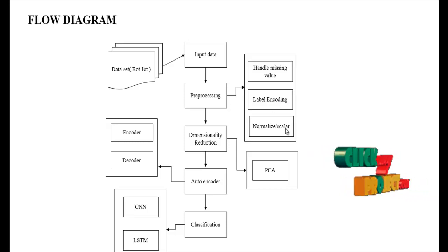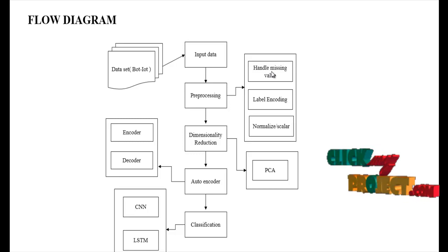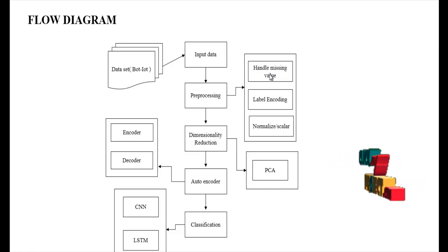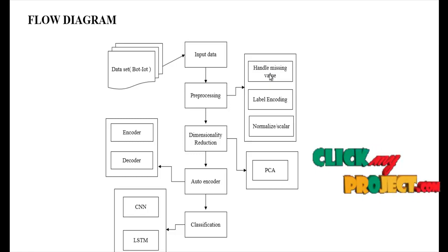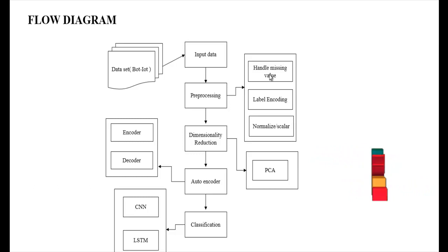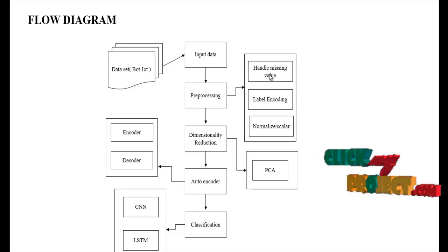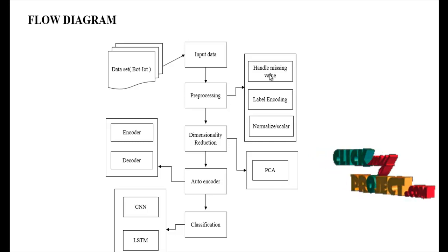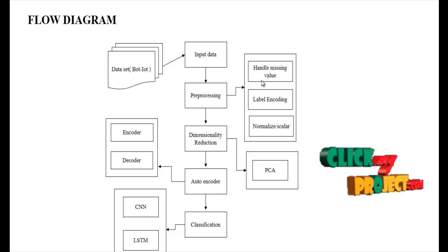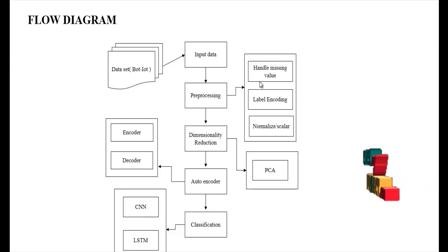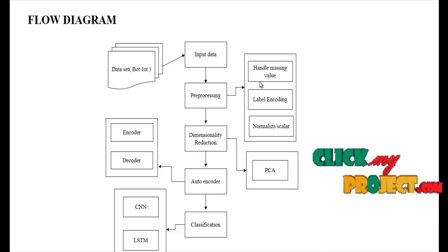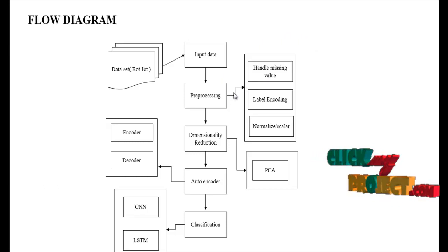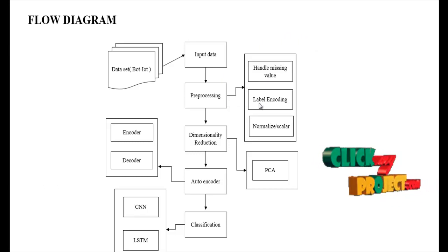In preprocessing we handle missing values, then perform label encoding, then normalize or scale the data. Handling missing values means checking the input data for any missing values in the dataset. If missing values are present, we replace them with zeros or null values. The purpose of handling missing values is to avoid wrong predictions.